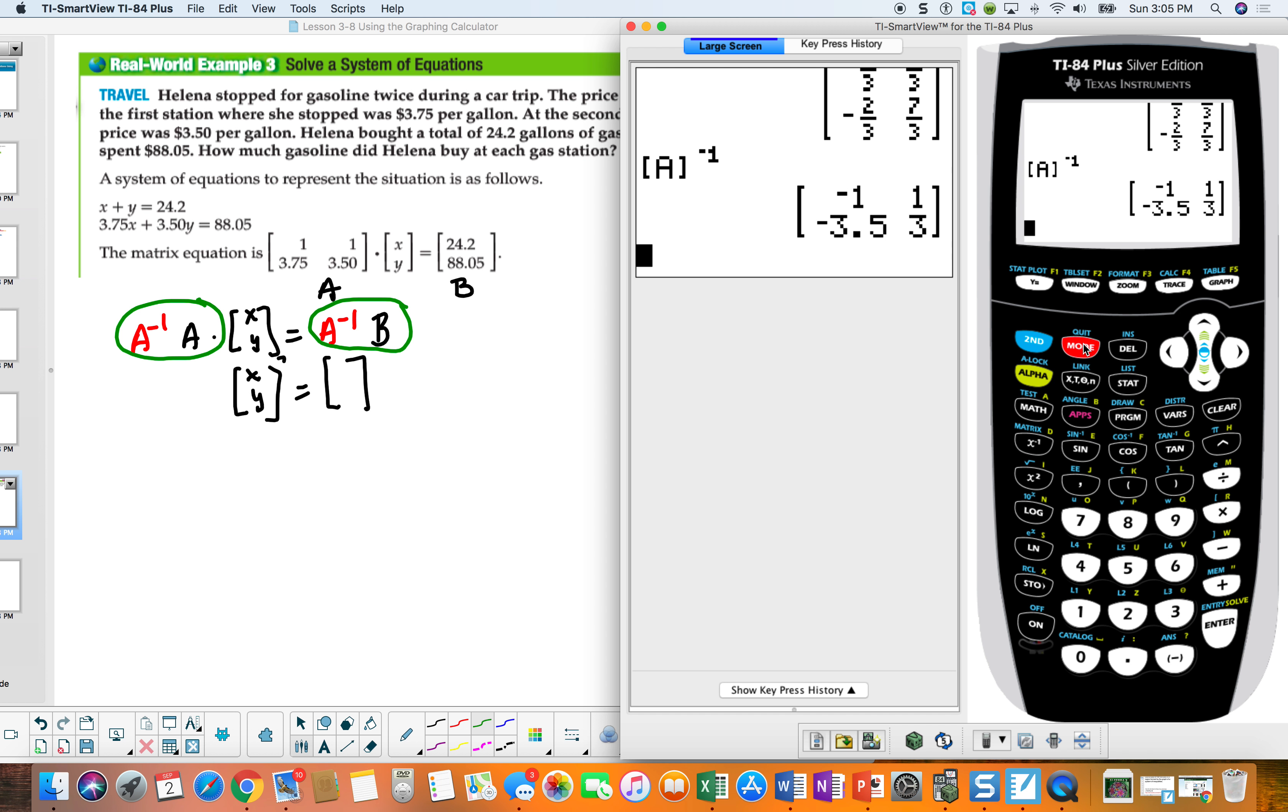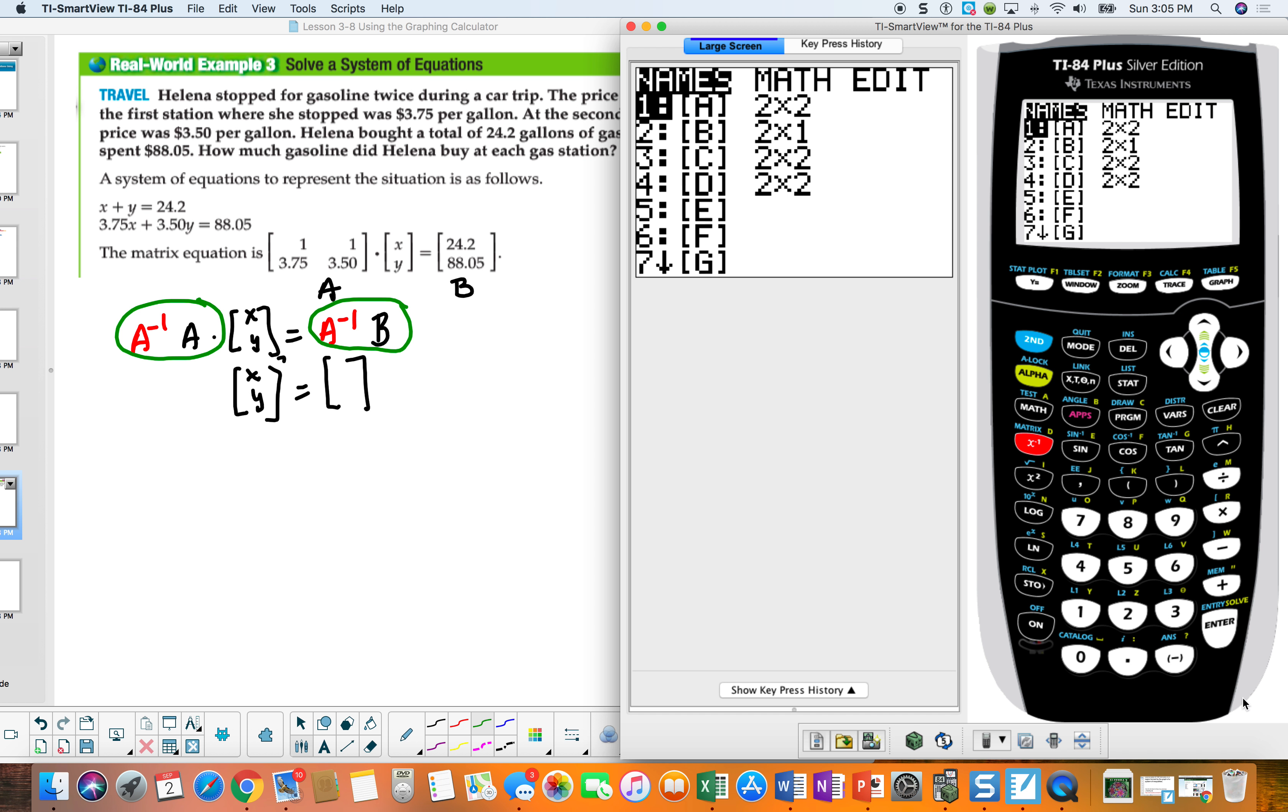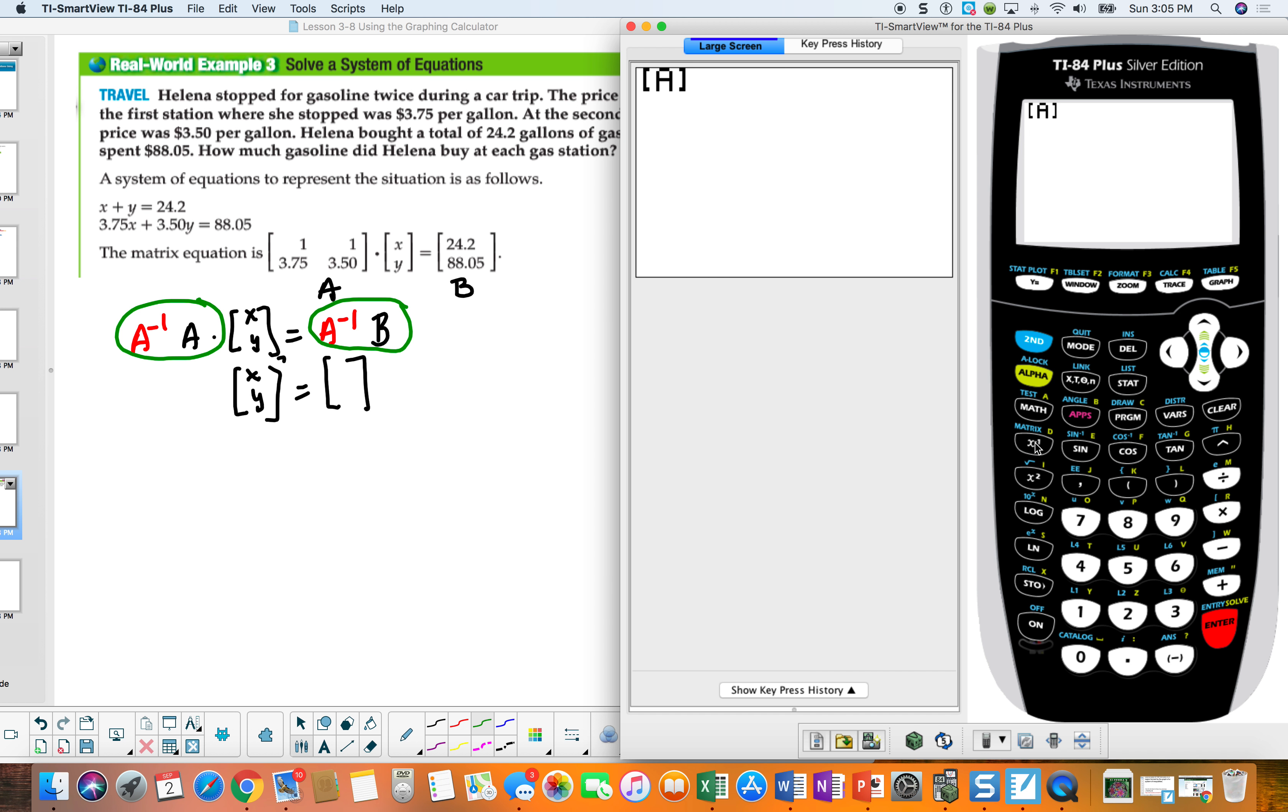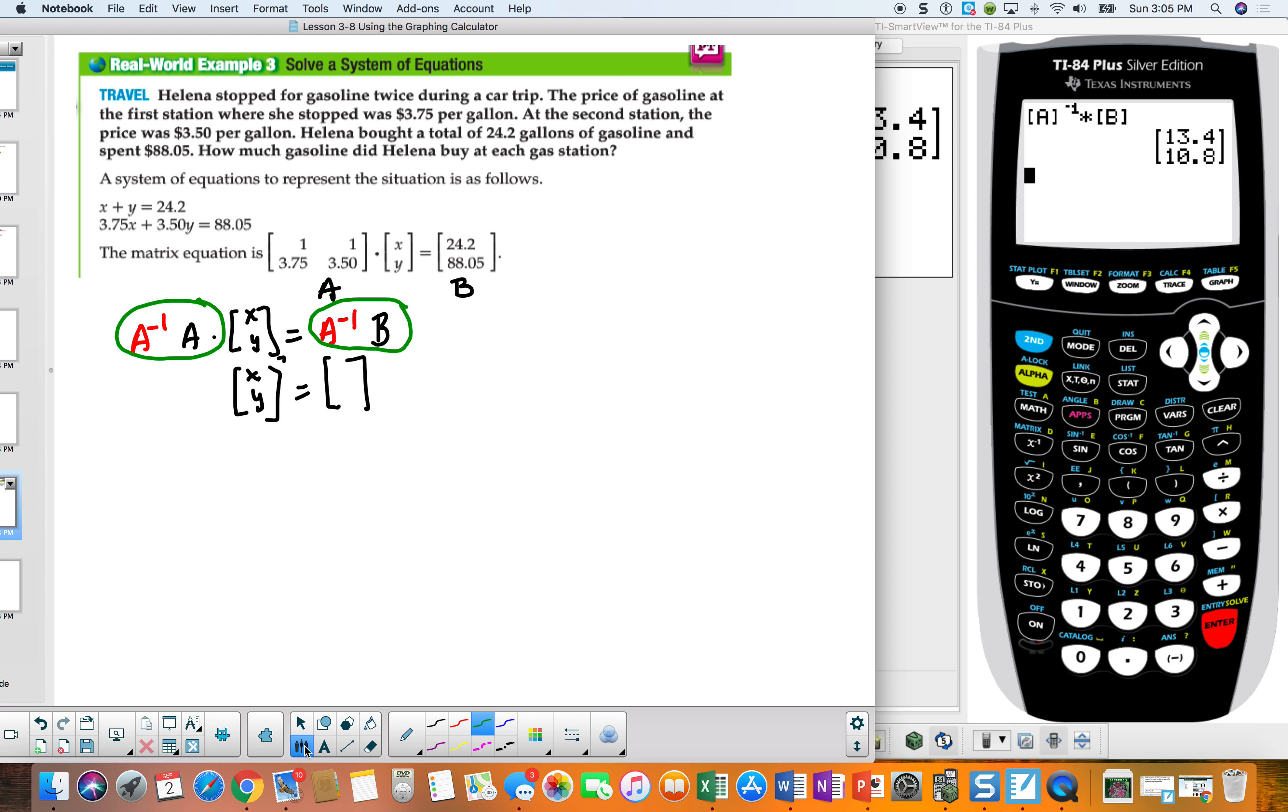So we're going to do clear, second matrix. I want A, but I want the inverse, and then I want to times it by B, when B is 2. And then we'll get our answer. So this should be 13.4. So I'm going to go over here. This is 13.4, and this is 10.8. So this tells me x is equal to 13.4, and y is equal to 10.8.